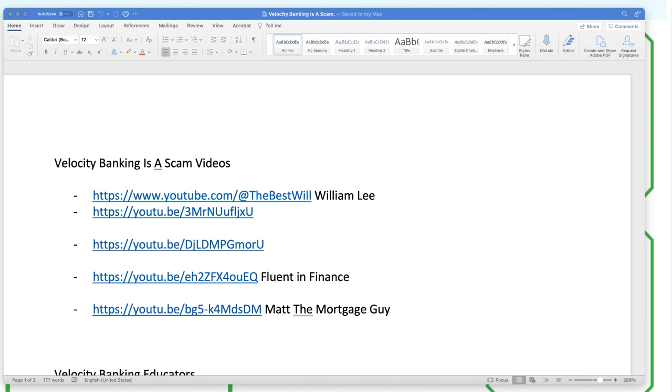So I gave you four videos, three YouTube channels, right? William Lee is a new person that I've seen put out a video that velocity banking is a scam. Fluent in finance, he believes velocity banking is a scam. And Matt, the mortgage guy, believes velocity banking is a scam, doesn't work, right? That the numbers are false. Typically, they're pulling their numbers from the velocity banking educators.